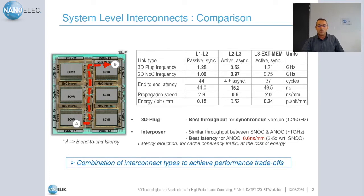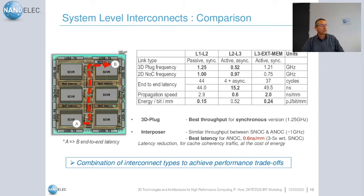Regarding main results: the 3D plug achieves the best throughput at 1.2 GHz for the synchronous version. For the interposer NOC, both synchronous and asynchronous versions achieve about 1 GHz throughput, but the best latency is with the asynchronous NOC. For chiplet-to-chiplet communication we achieve a propagation speed of less than one nanosecond per millimeter — three to five times better than state of the art for synchronous on-chip networks. This latency reduction is very important for cache coherency traffic. These results show we need a combination of different interconnect types to achieve different performance trade-offs.